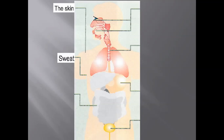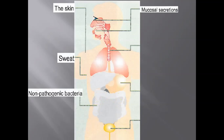Sweat is slightly acidic — its pH is between 3 and 5 — and it can destroy a wide range of microorganisms. The non-pathogenic bacteria are the good bacteria that survive and take our small intestine as their habitat. These bacteria compete with the harmful bacteria, making this space not suitable for the survival of pathogenic bacteria.